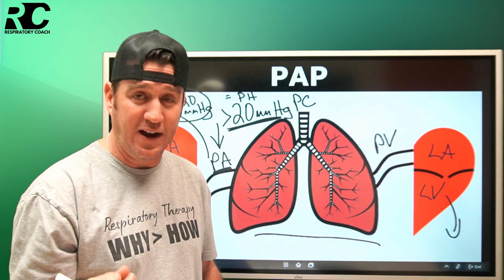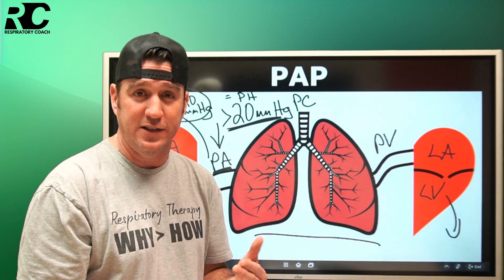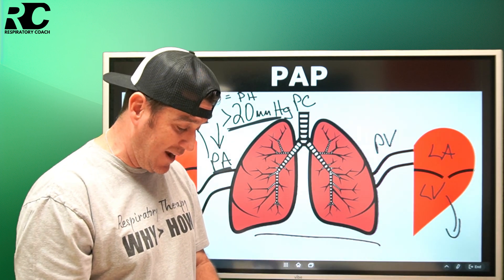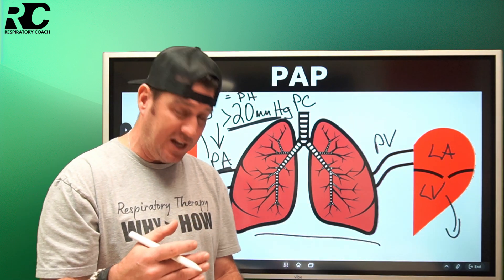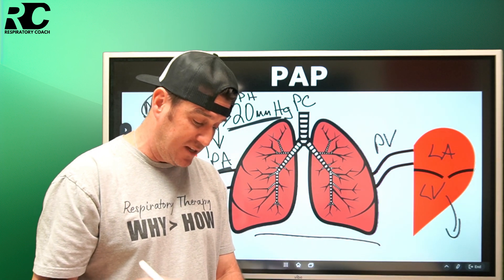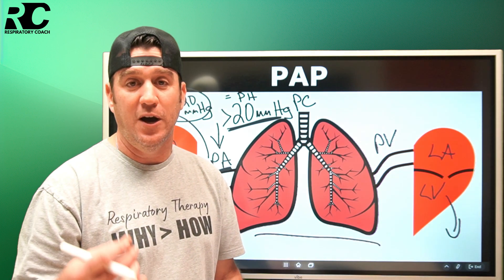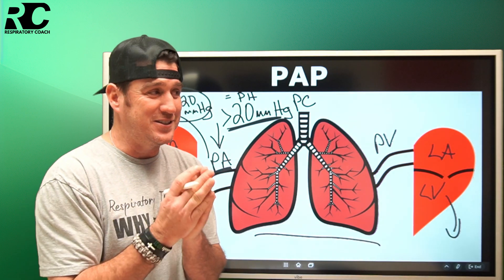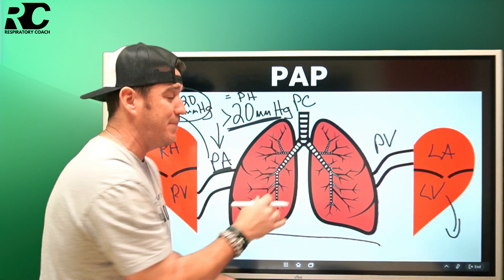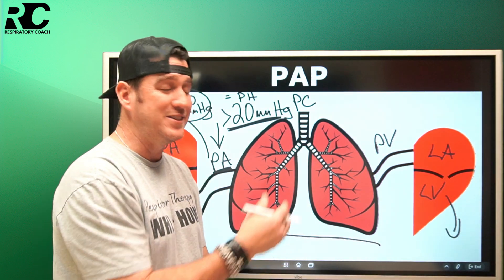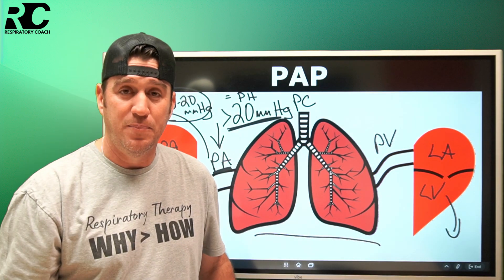There are many causes of pulmonary hypertension broken into classifications. Pulmonary hypertension can be associated with left heart disease, with lung diseases and hypoxia, and with pulmonary artery obstruction. Basically, anything that makes blood flow through the pulmonary capillaries harder is going to elevate your pulmonary artery pressure. If it increases above 20 mmHg, it is pulmonary hypertension.